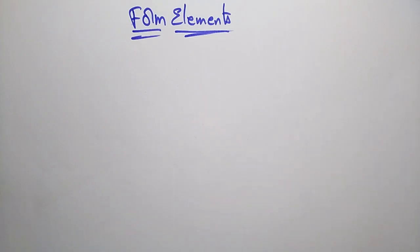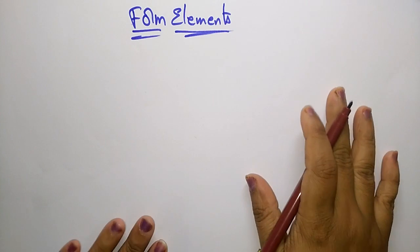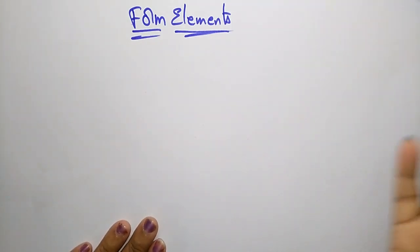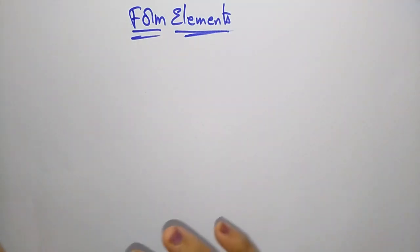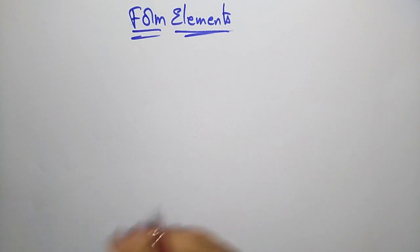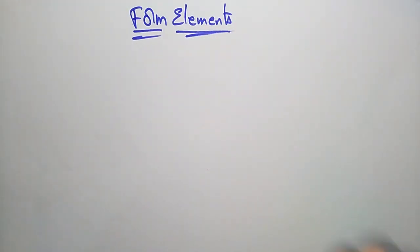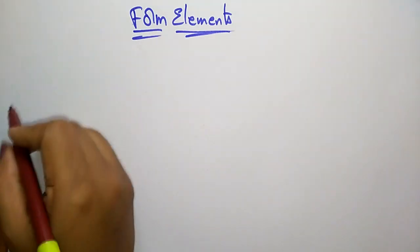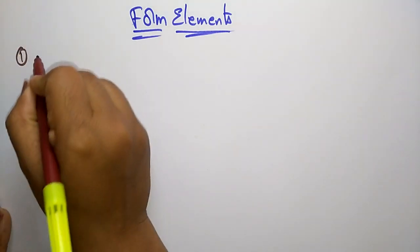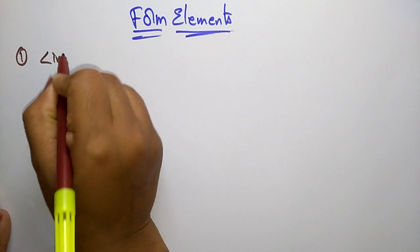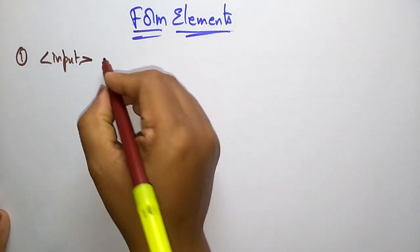Hi students, let us continue with HTML5. In the previous video I had explained some of the new attributes used in HTML5. Now let's see the form elements used in HTML5. There are different form elements — let me explain them one by one. The first one is the input element.